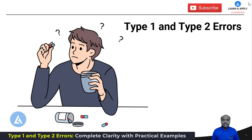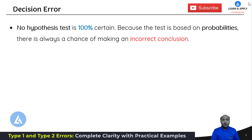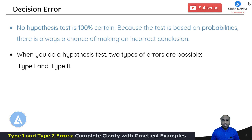In the last video we had seen what is a null hypothesis and what is an alternative hypothesis, and based on these two important statements we are going to take decisions. But we need to remember that no hypothesis test is 100% certain because the test is based on probabilities. As it is based on probabilities, there is always a chance of making an incorrect decision. When we conduct hypothesis testing, two types of errors are possible: type 1 error and type 2 error.